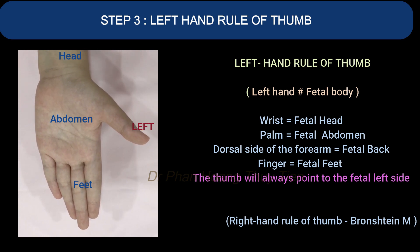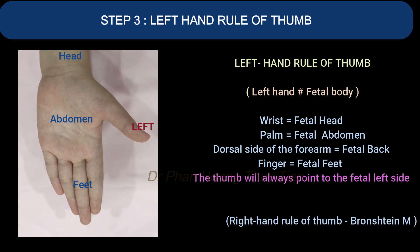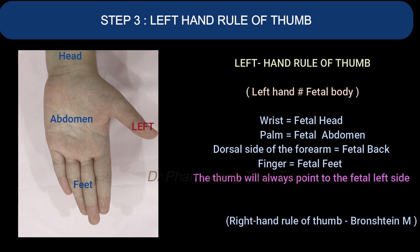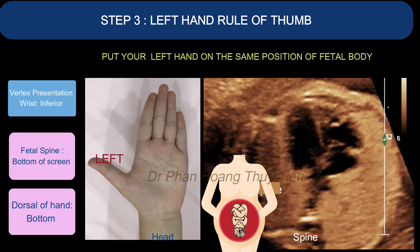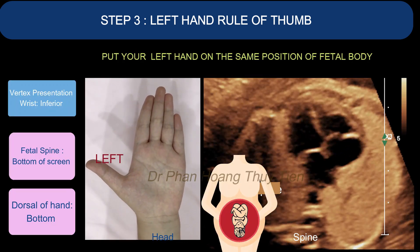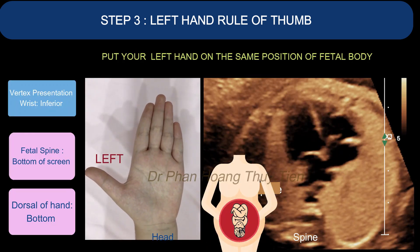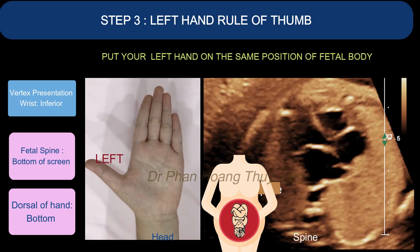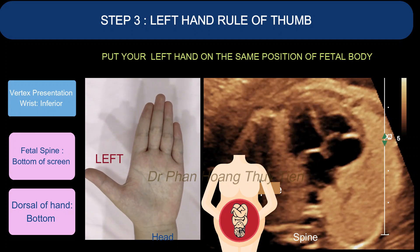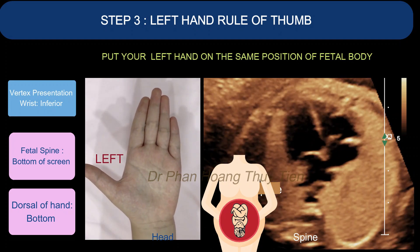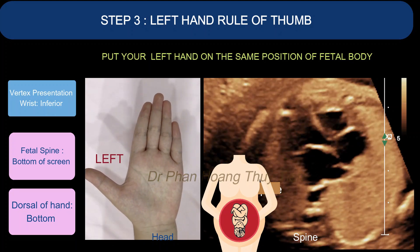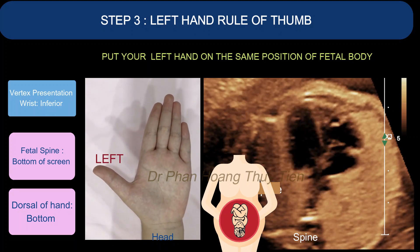Step 4. The wrist will be the fetal head, the palm will be the fetal abdomen, the dorsal side of the forearm will be equivalent to the fetal back, and the fingers will be equivalent to the fetal feet. Put your left hand in the same position as the fetal body. A small reminder that since this is a vertex presentation, the wrist, which is the fetal head, will be inferior. In this example, the fetal spine is at the bottom of the screen, so your hand dorsal will be at the bottom.